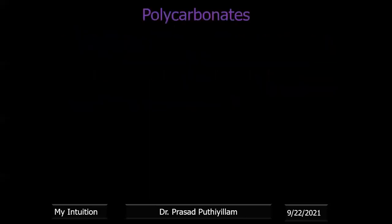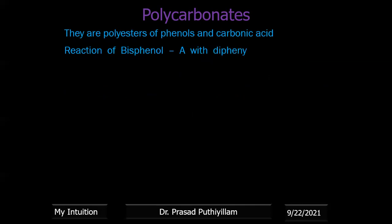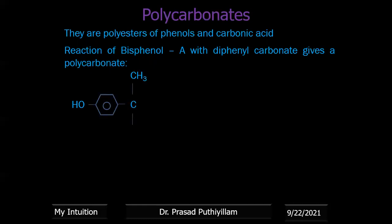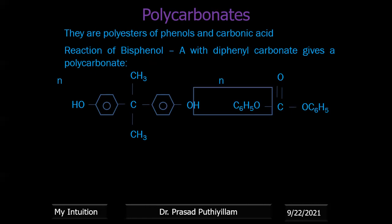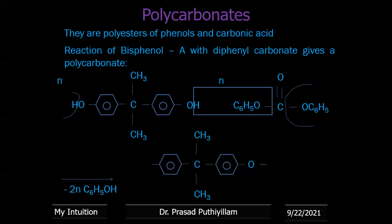Polycarbonates are polyesters of phenols and carbonic acid. The example given is the reaction of bisphenol A with diphenyl carbonate to give a polycarbonate. In this condensation reaction, C6H5OH is removed on either side; after removal of 2N molecules of phenol, the repeating unit of the polycarbonate polymer is obtained.